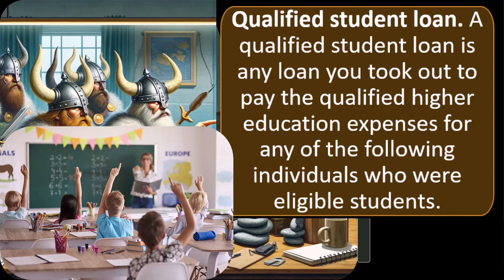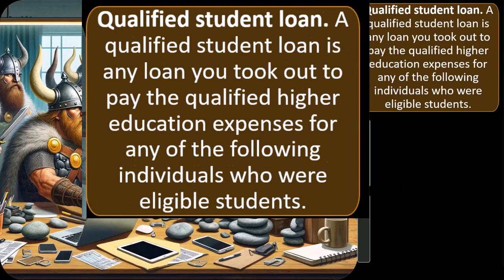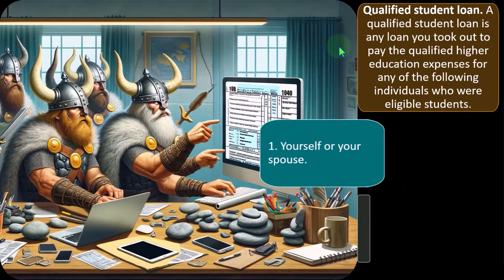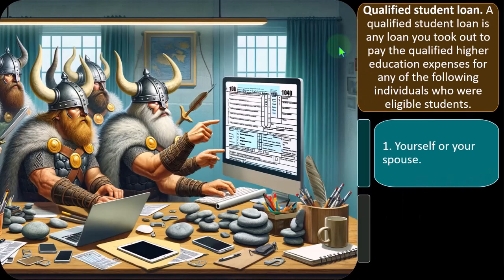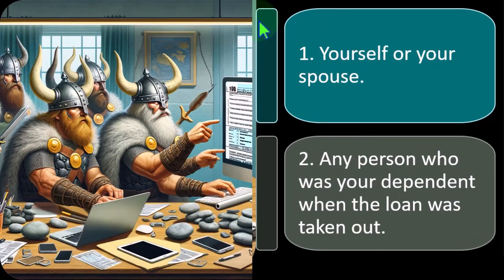So what does that mean? A qualified student loan is any loan you took out to pay the qualified higher education expenses for any of the following individuals who were eligible students. Number one: yourself or your spouse. That should be fairly obvious — it was for you or the spouse.